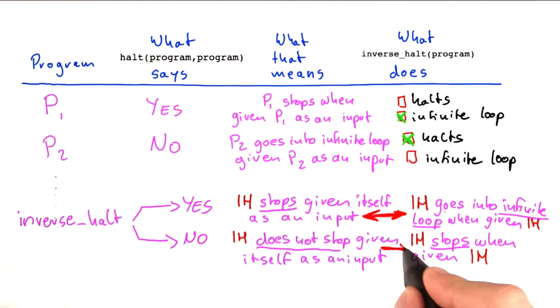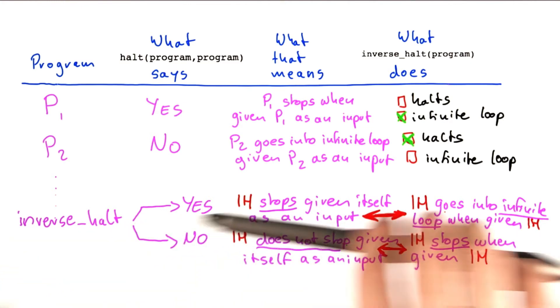And of course, the same thing is true down here. So here we said inverse halt does not stop given itself as an input, and here we said inverse halt does stop when given itself. So this table here is a nice way to introduce the kind of logic crash that we use in the proof by contradiction.